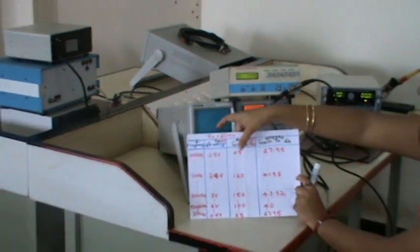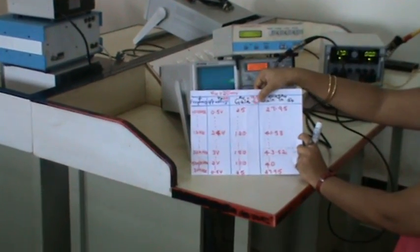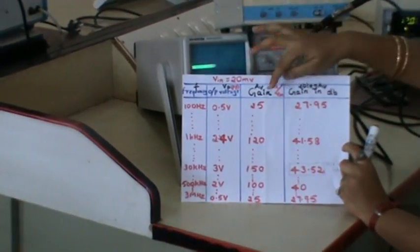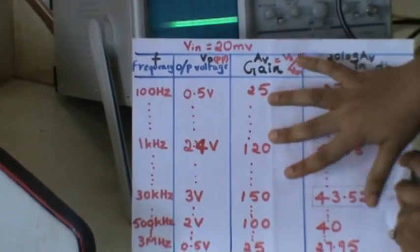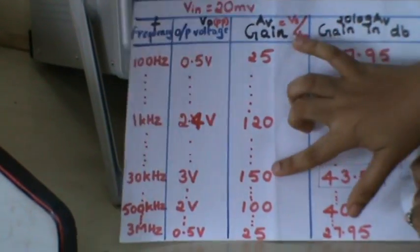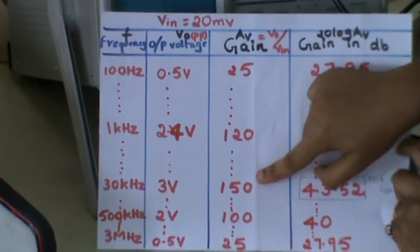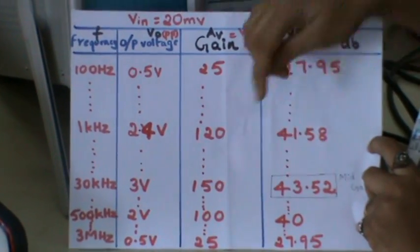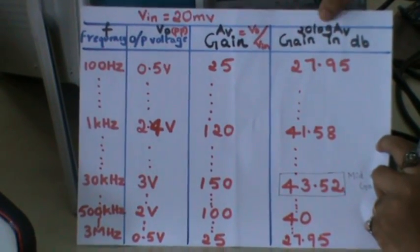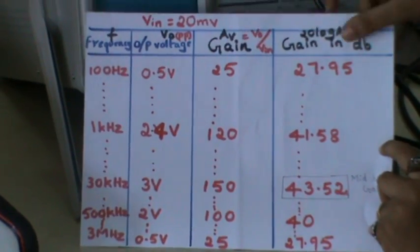From the readings, the gain is calculated as Vout by Vin, where Vin is 20 millivolt. These are the gains. We can see in the mid band gain that here it has obtained as 120. These values are taken in dB, that is 20 log of the gain is found out. 43.52 is a mid band gain.